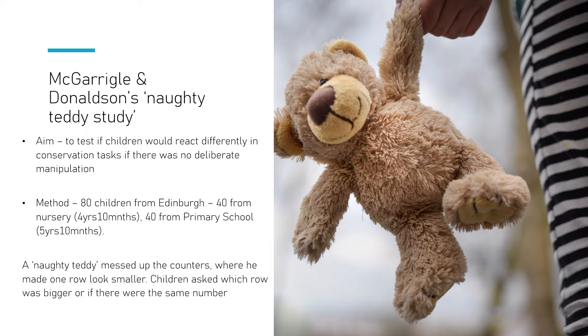So what they did is they did a recreation of the counter study, but this time instead of an adult researcher purposely moving the counters, they aimed to look to see if children would react differently if it wasn't deliberately manipulated. So that's where the naughty teddy comes in. They got children from Edinburgh, there was 40 of them from a nursery, 4 years and 10 months old, and the other 40 were 6 years and 10 months old.